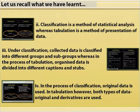Number 4: In the process of classification, original data is used. In tabulation, however, both types of data — original and derivatives — are used.